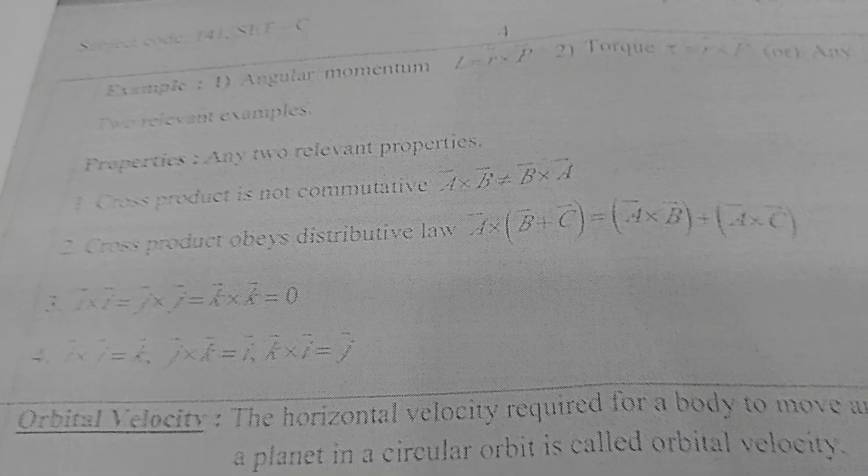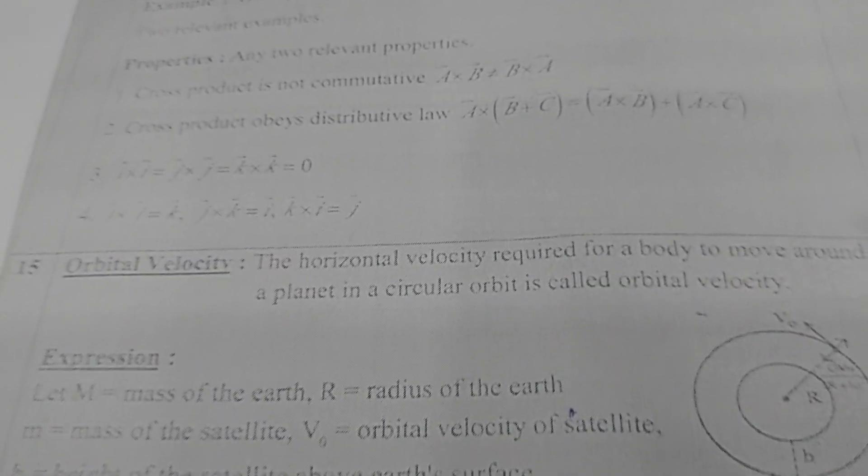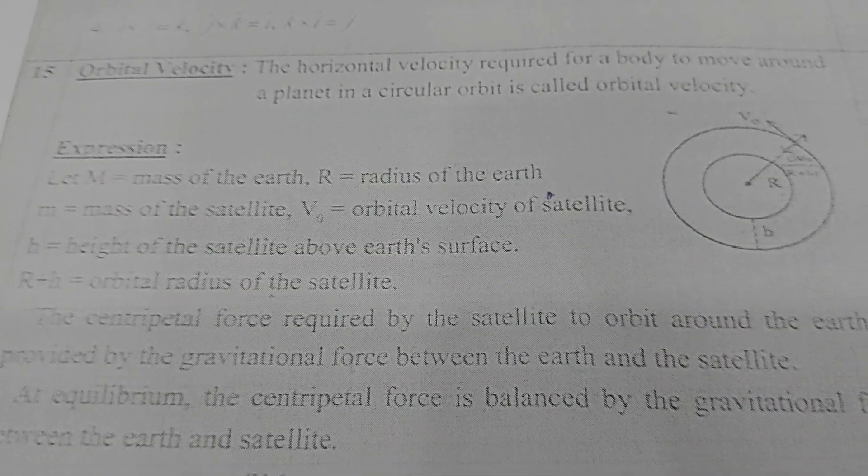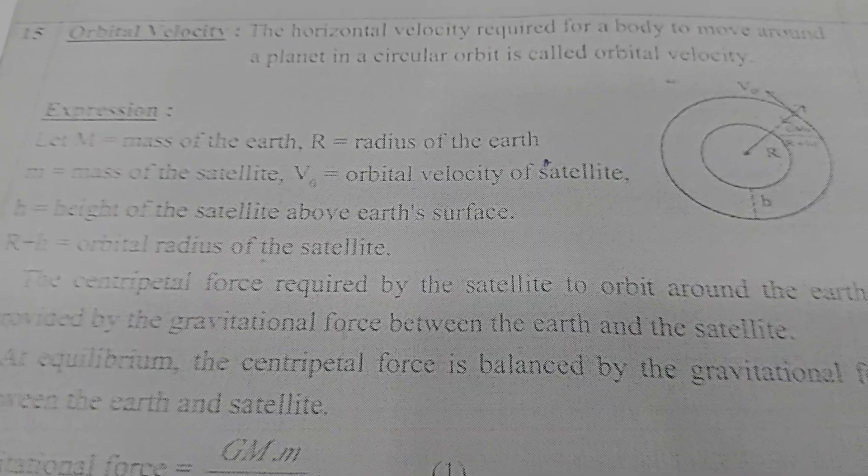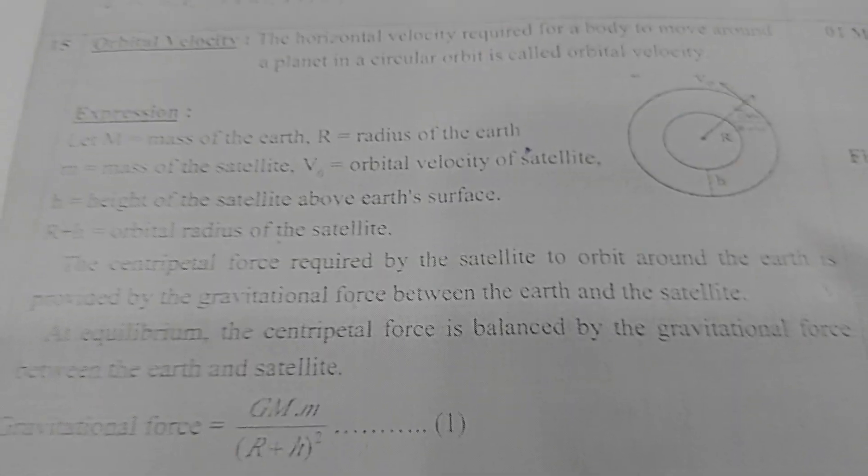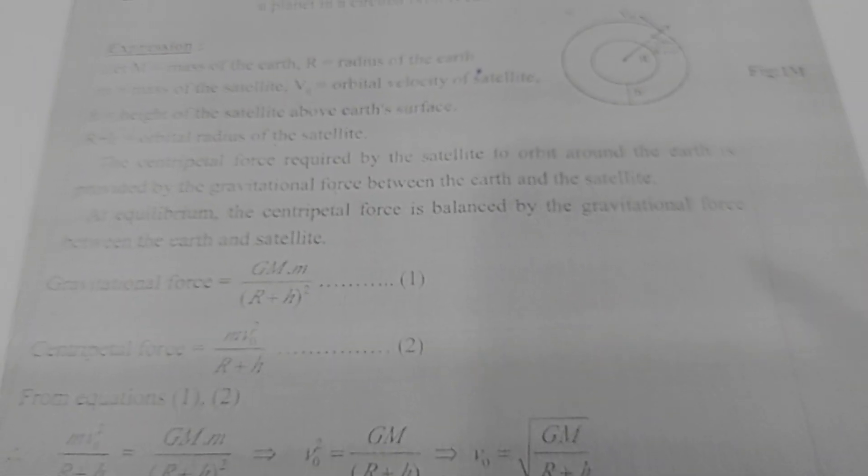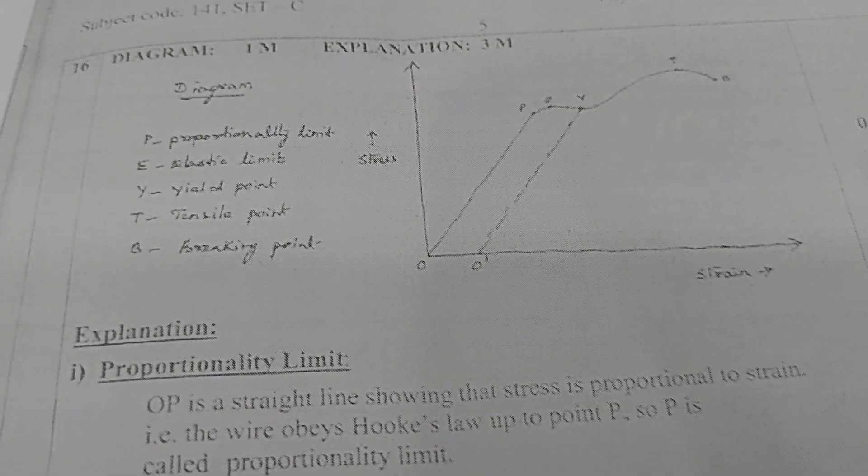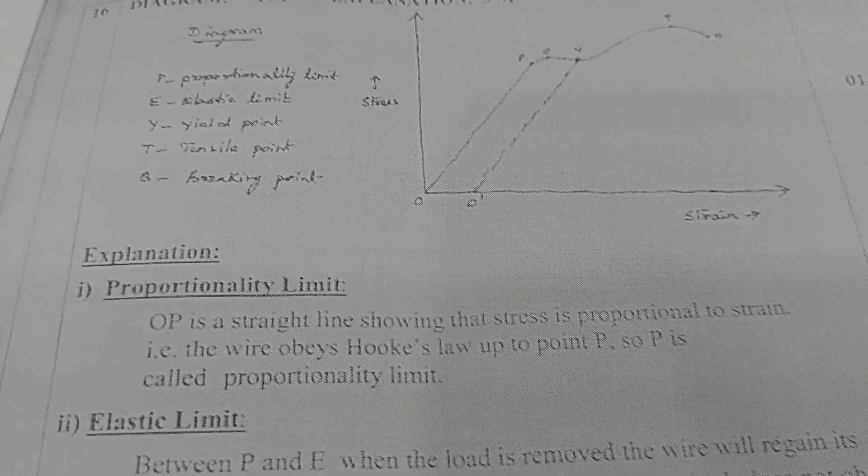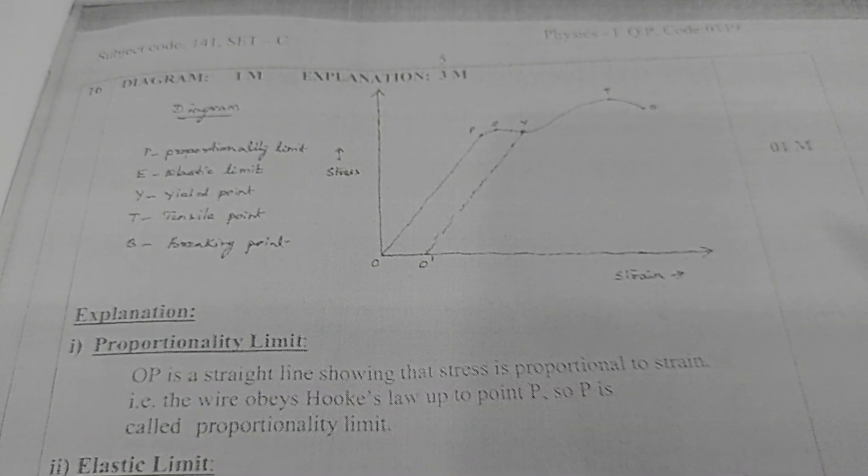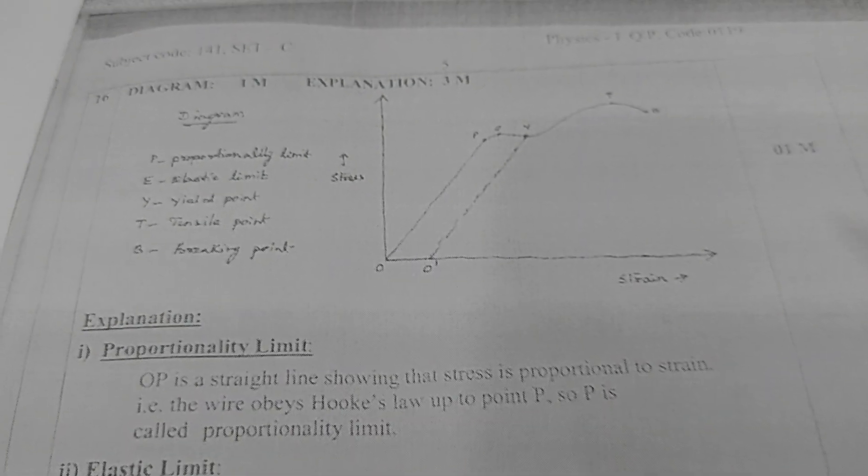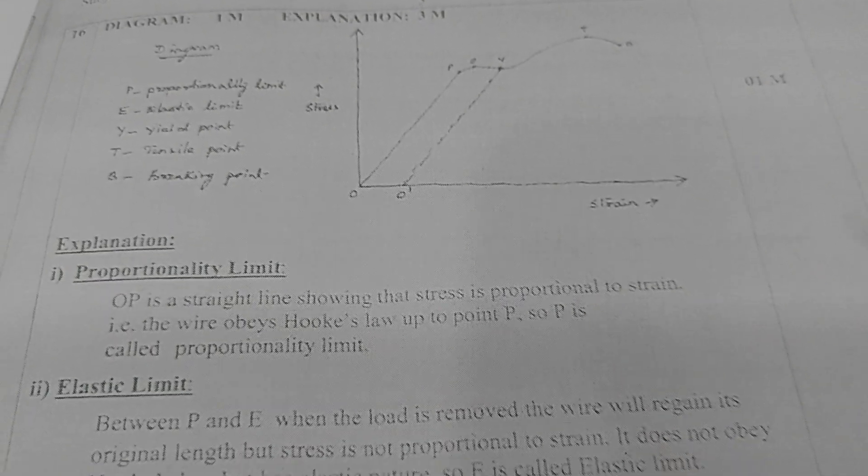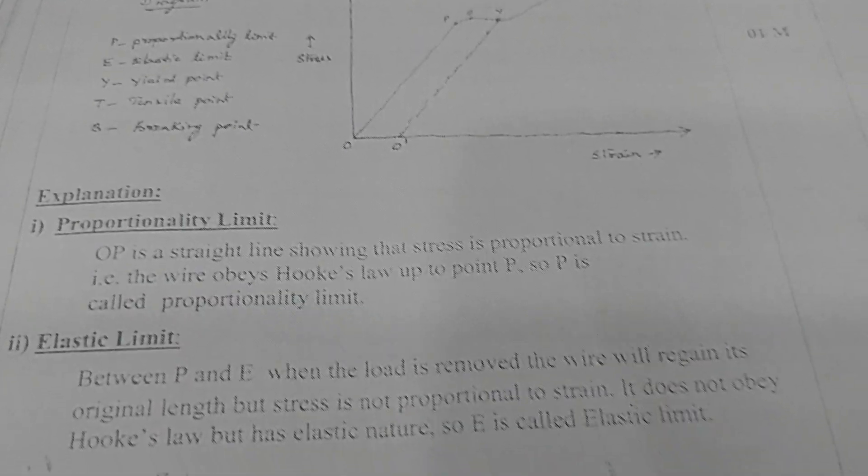This is question number 14. Now we have question number 15. 14 continues here with example properties. Question number 15: orbital velocity expression, one mark explanation three marks. This is the diagram followed by the explanation part.